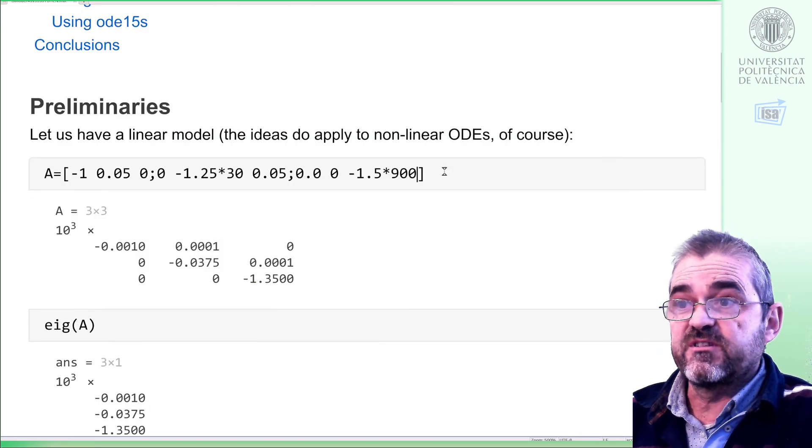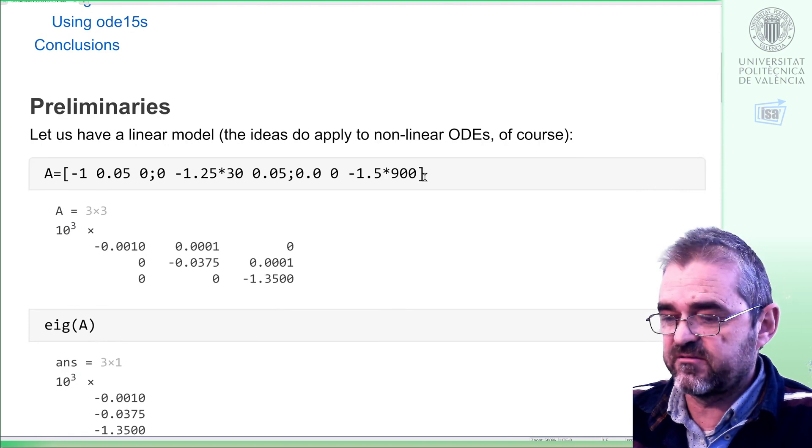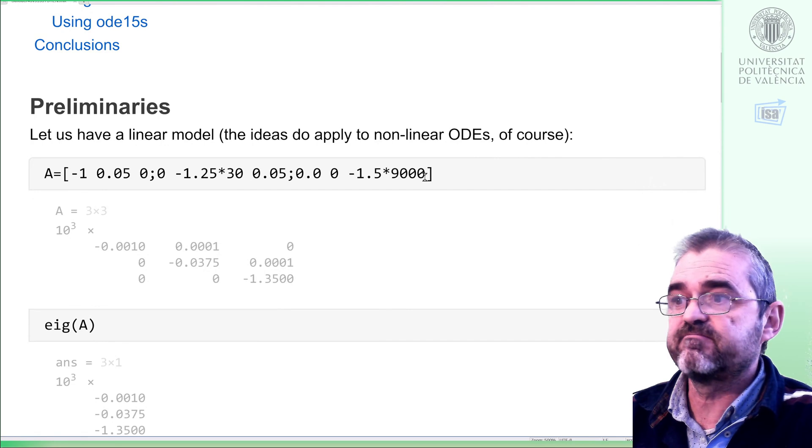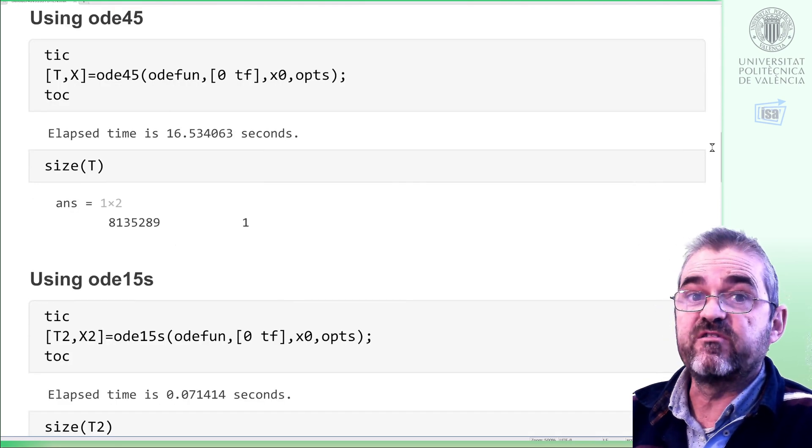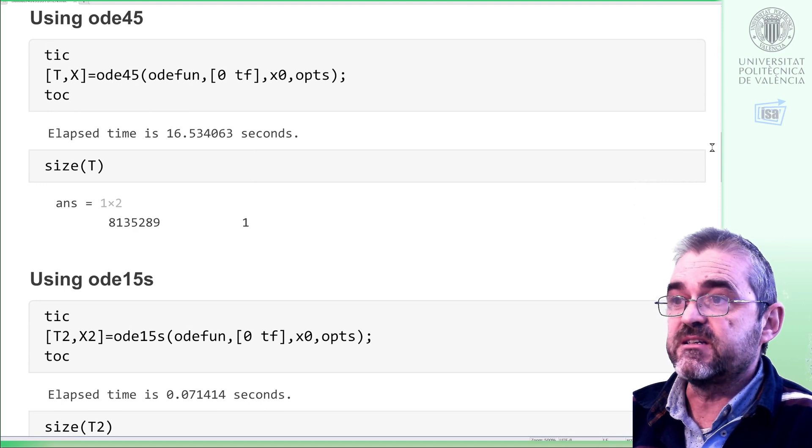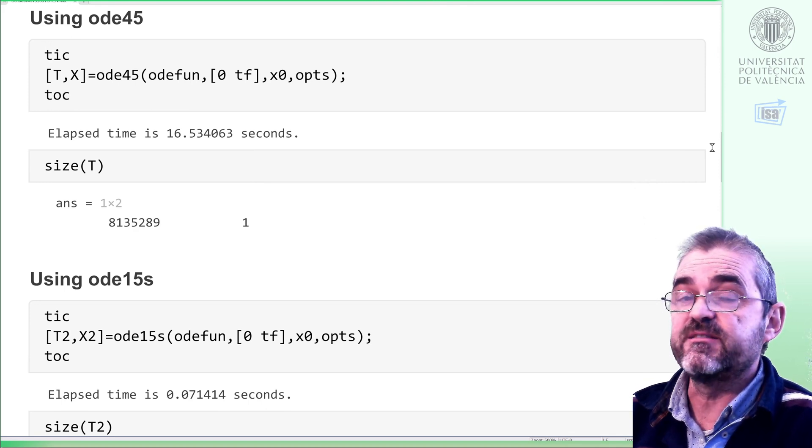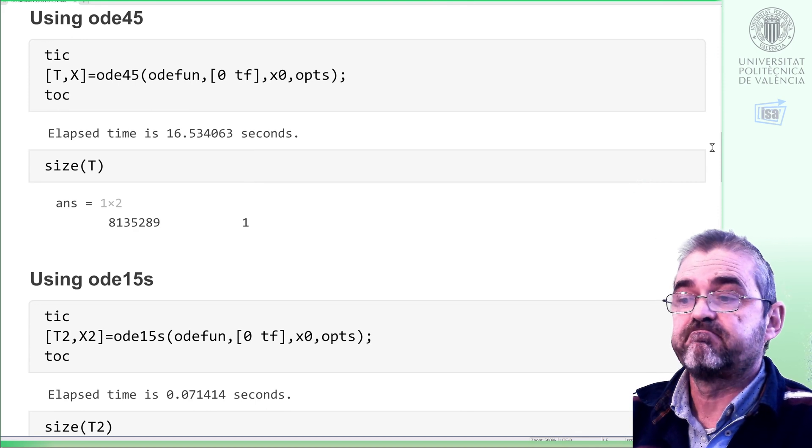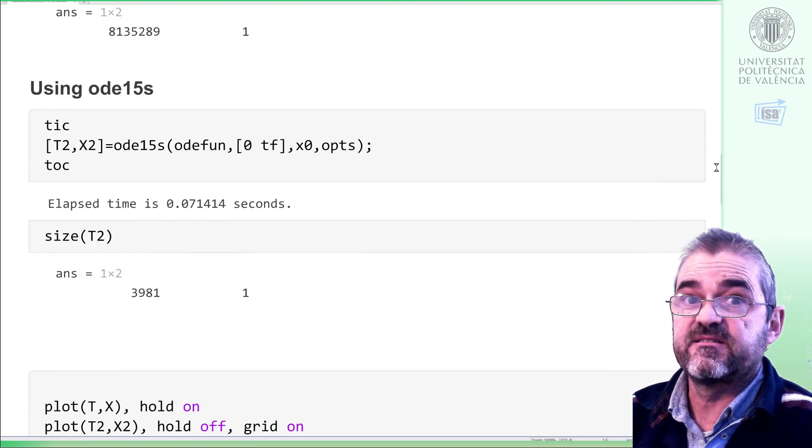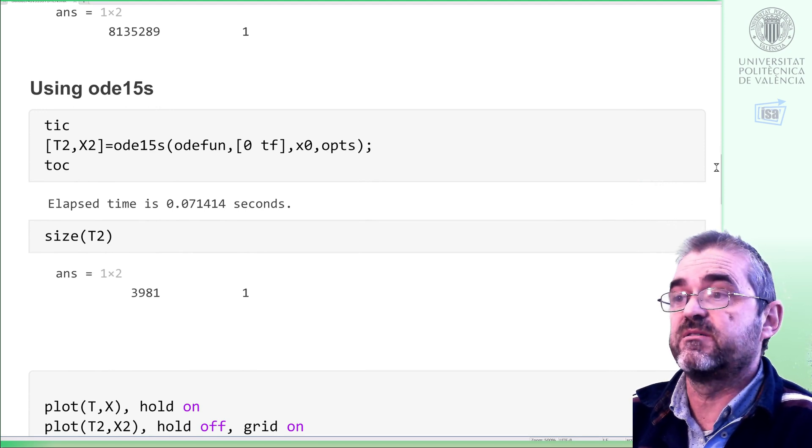And in fact, if the time constants were even more different, so I put here 9000 faster than in the first problem, and I execute, then ODE45 takes now 10 times longer, 16 seconds and 10 times more points, 8 million points. But ODE15 takes even less, 71 milliseconds now, and again 4000 points.